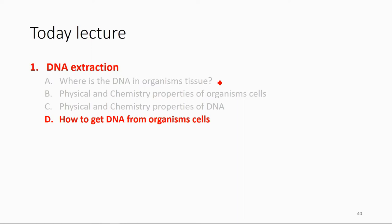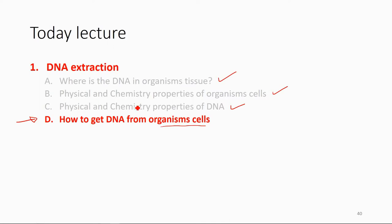So we have now discussed where the DNA is in the cell, the physical and chemical properties of the organism cell, and the physical and chemical properties of DNA. After you have read and understood all this, we can go on to the methods. Understanding all this allows us to learn the principles of the methods that extract DNA from organism cells — those methods are developed based on these physical and chemical properties.